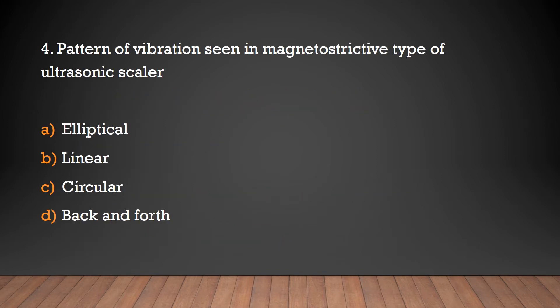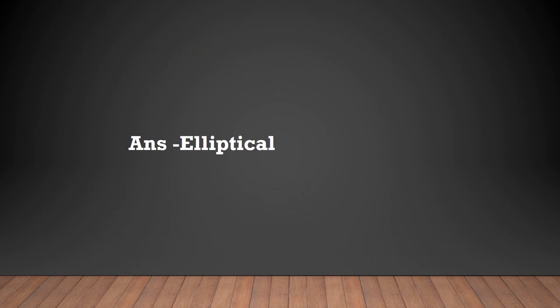The pattern of vibration seen in the magnetostrictive type of ultrasonic scaler is: elliptical, linear, circular, or back and forth? The answer is elliptical — an elliptical pattern of vibration is seen in the magnetostrictive type of ultrasonic scaler.